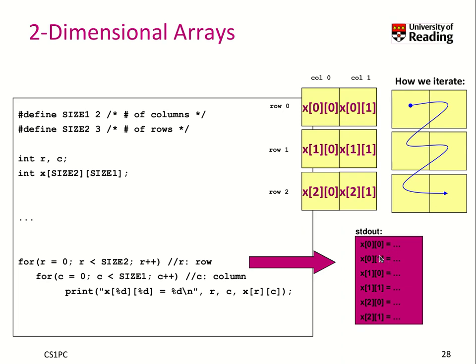And so what we're basically printing is the values for x[0][0], [0][1], [1][0], [1][1], [2][0], and [2][1]. But it's up to us.